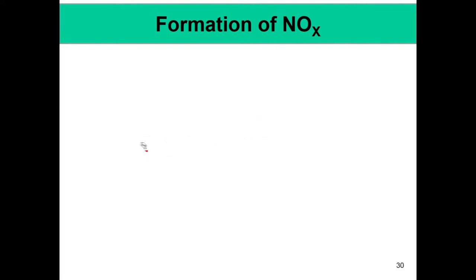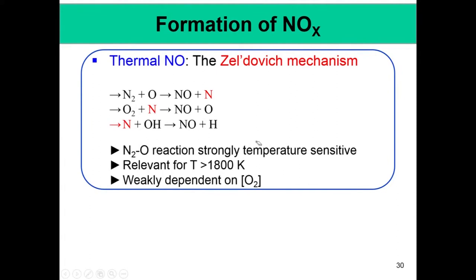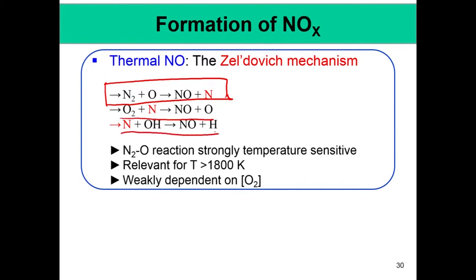The first route, which is the most important as discovered by Zeldovich, is thermal NOx, obtained by the Zeldovich mechanism. The most important step is the first step, where N2 is attacked by an oxygen atom and forms NO and an N atom. The N atom can then react with oxygen to form NO and O, and then N and OH can form NO and H. This first reaction is the most important and is strongly temperature sensitive. It is also the rate-limiting mechanism because it is very difficult to break the N≡N bond, and this bond can only be broken by an oxygen atom at very high temperatures.